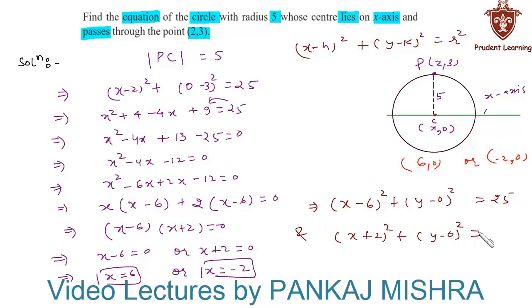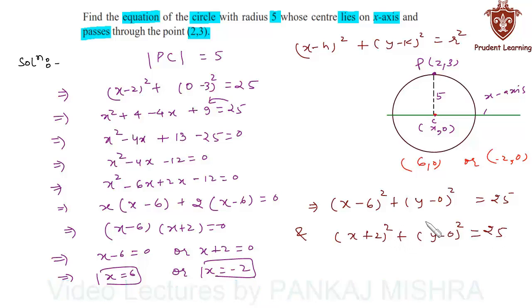Actually, we can leave our answer here also, but if you wish to simplify this further, then this will give you x² + y² + 4x - 21 = 0.